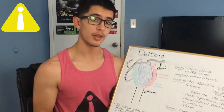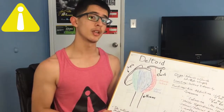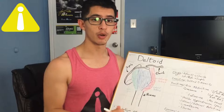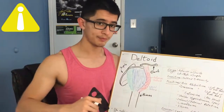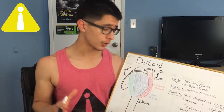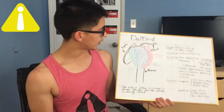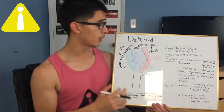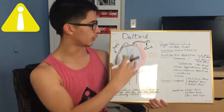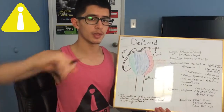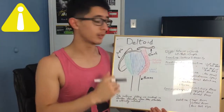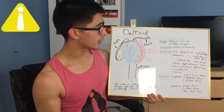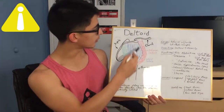The origin of the other two heads are on the scapula, back here on your shoulder blade. They all converge onto the deltoid tuberosity of the humerus and they all perform one primary function, which is arm abduction — taking your arm away from your body.